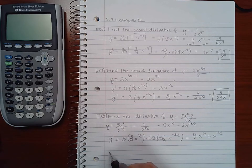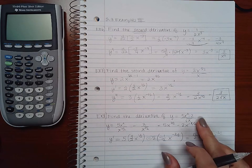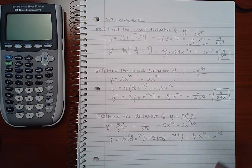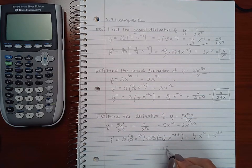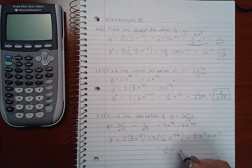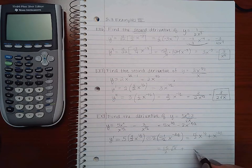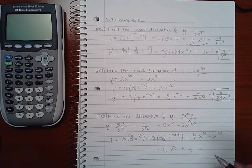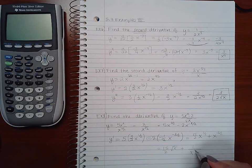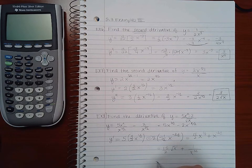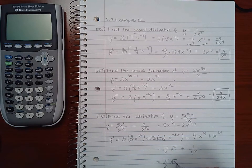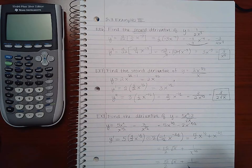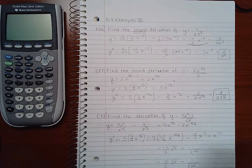And then now I'm going to do, oh, it doesn't say second derivative, it just says find the derivative. So I'm just going to write this as 15 over 2 square root of x plus 1 over, and this will be in the denominator, as a positive 3 halves, which can also be written as the square root of x cubed.